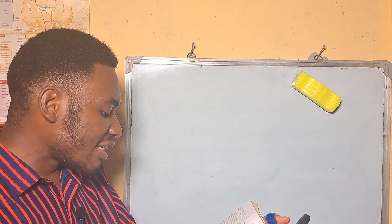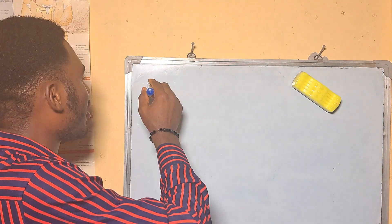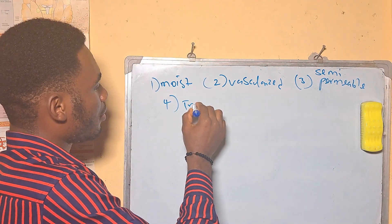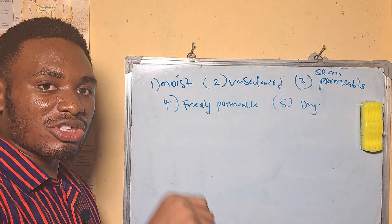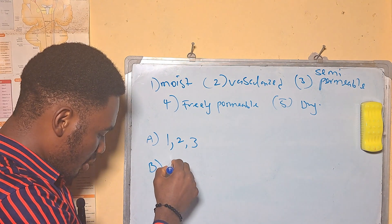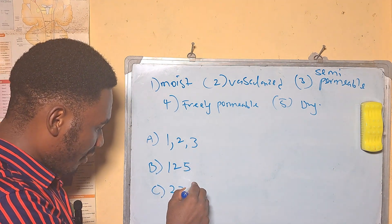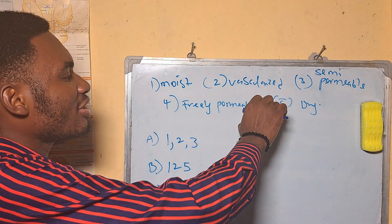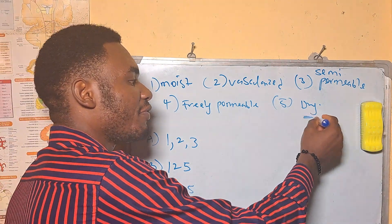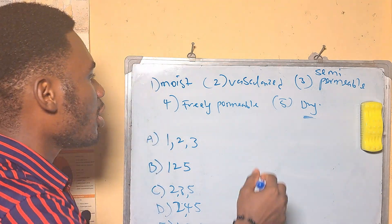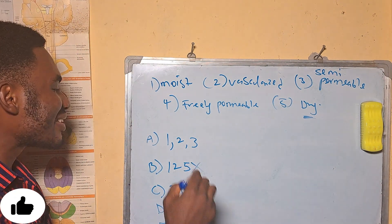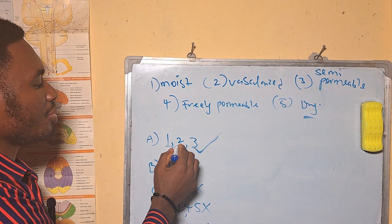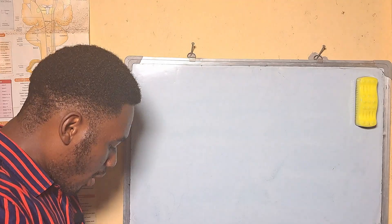Identify which of the following are features of vertebrates' respiratory surface: 1. moist, 2. vascularized, 3. semi-permeable, 4. freely permeable, 5. dry. Options: A: 1,2,3 | B: 1,2,5 | C: 2,3,5 | D: 1,2,4,5 | E: 1,3,5. The answer is A, because the respiratory surface can never be dry — if it is dry, oxygen cannot diffuse to the tissue. All other options include option 5 (dry), so they are eliminated. It must be moist and vascularized.